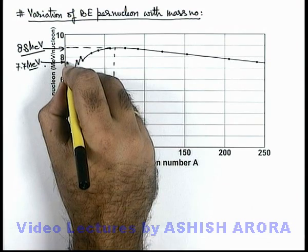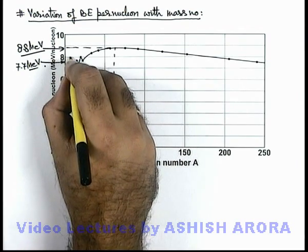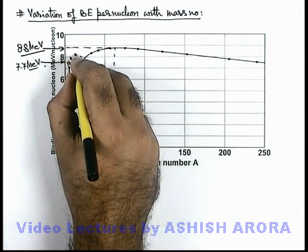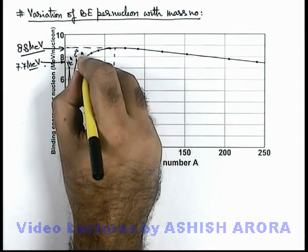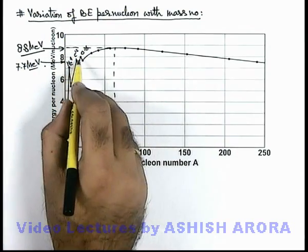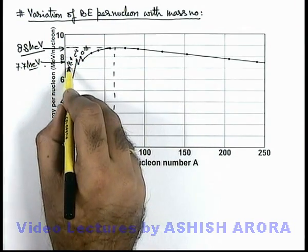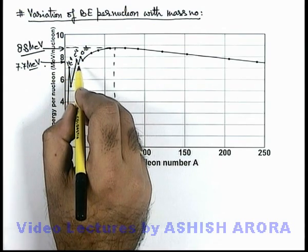And here we can see, this is helium-4, then carbon-12, and oxygen-16. Their binding energy is more compared to their neighbors.